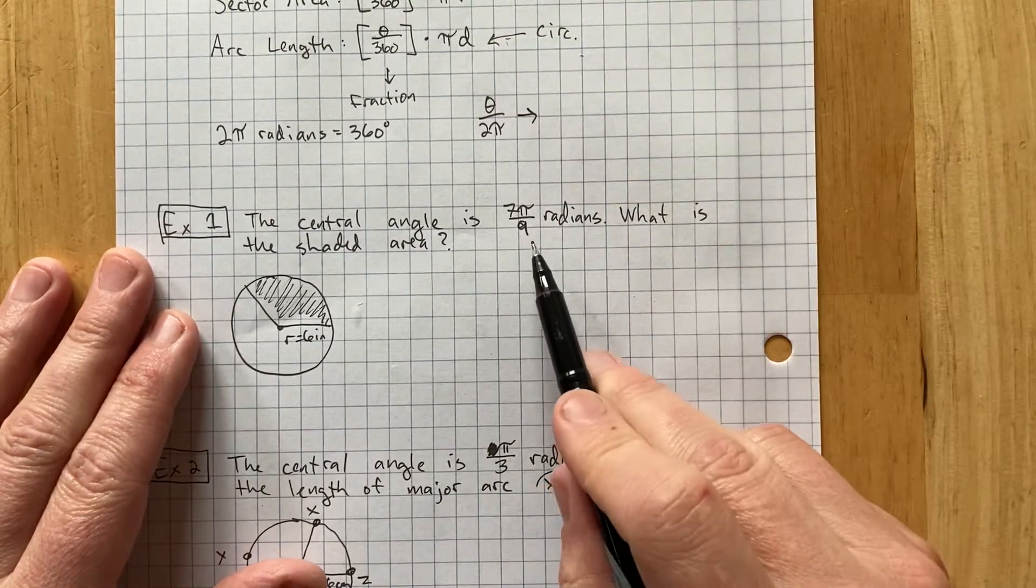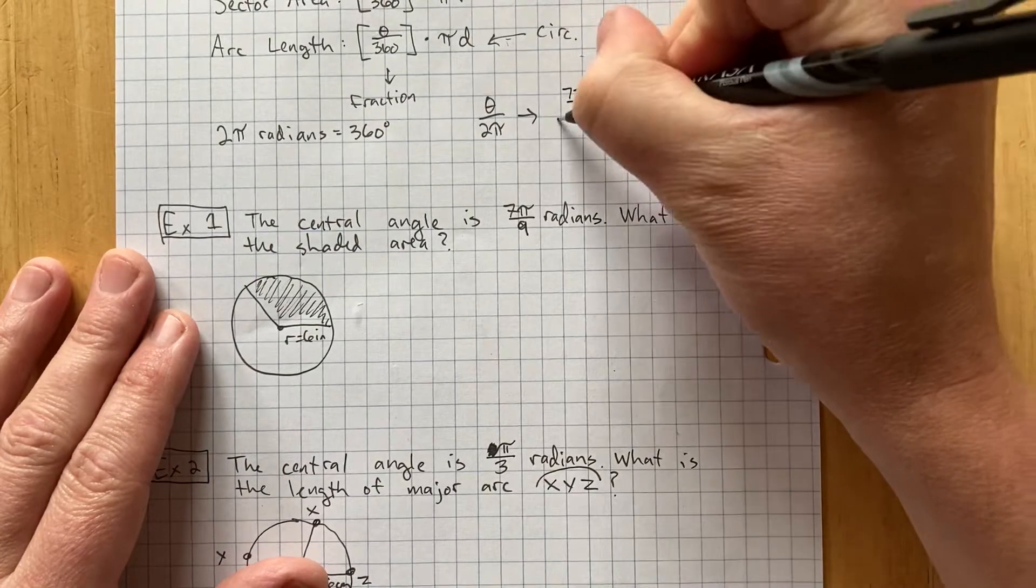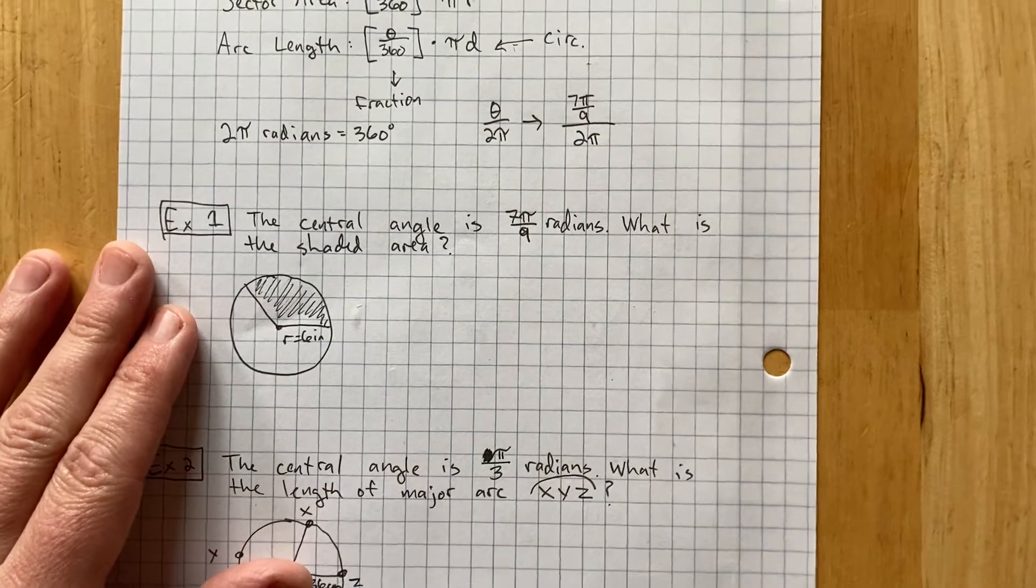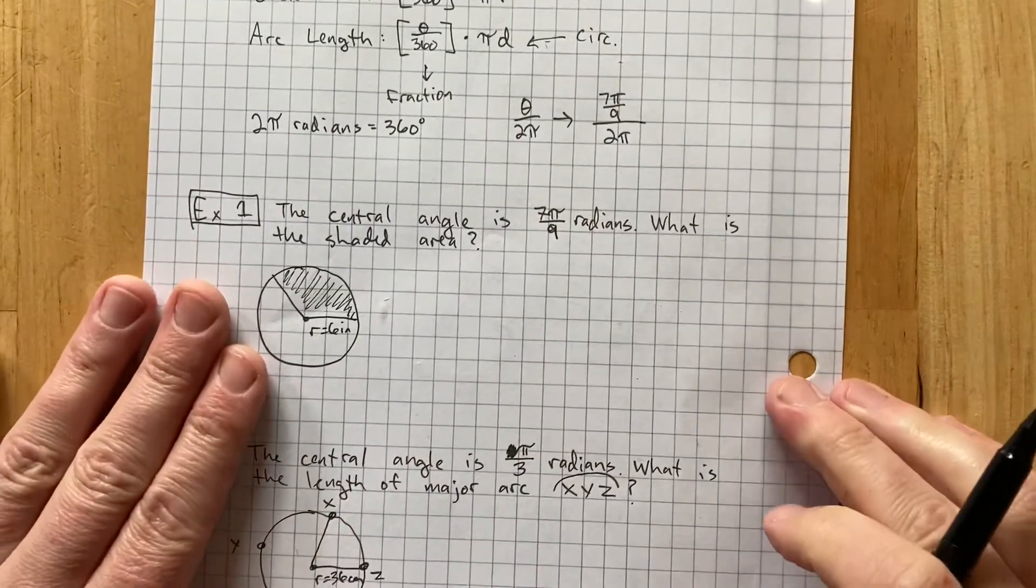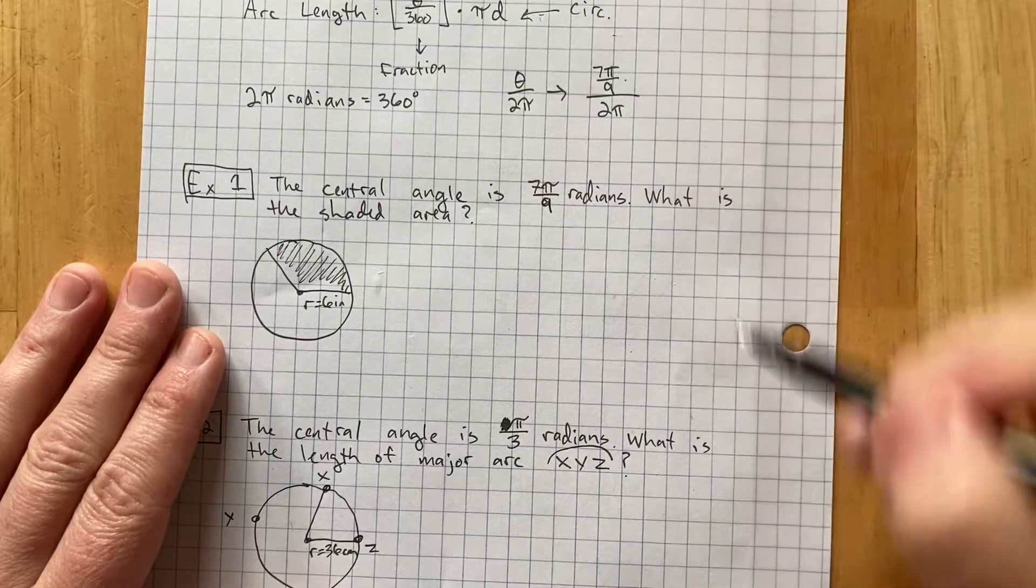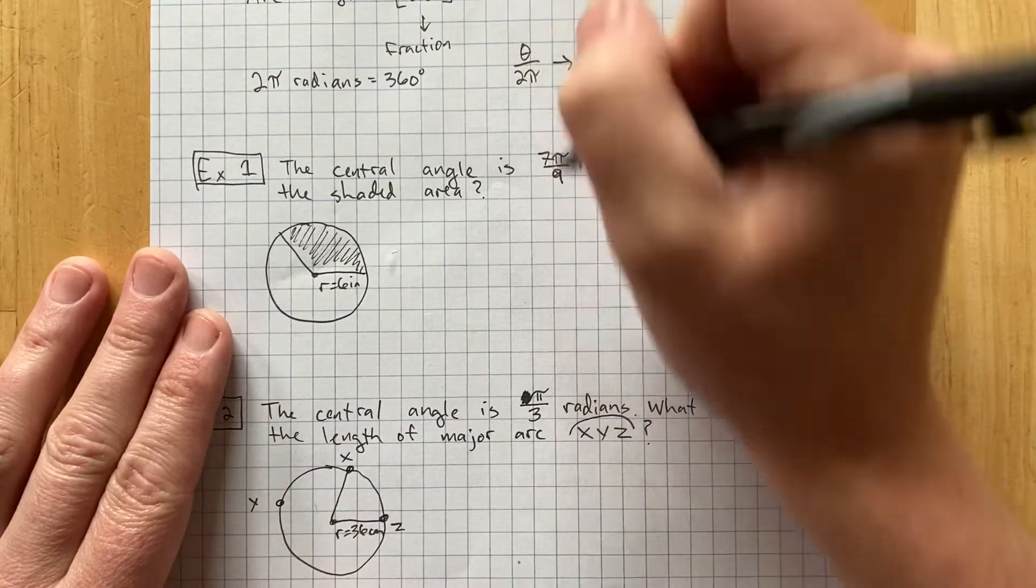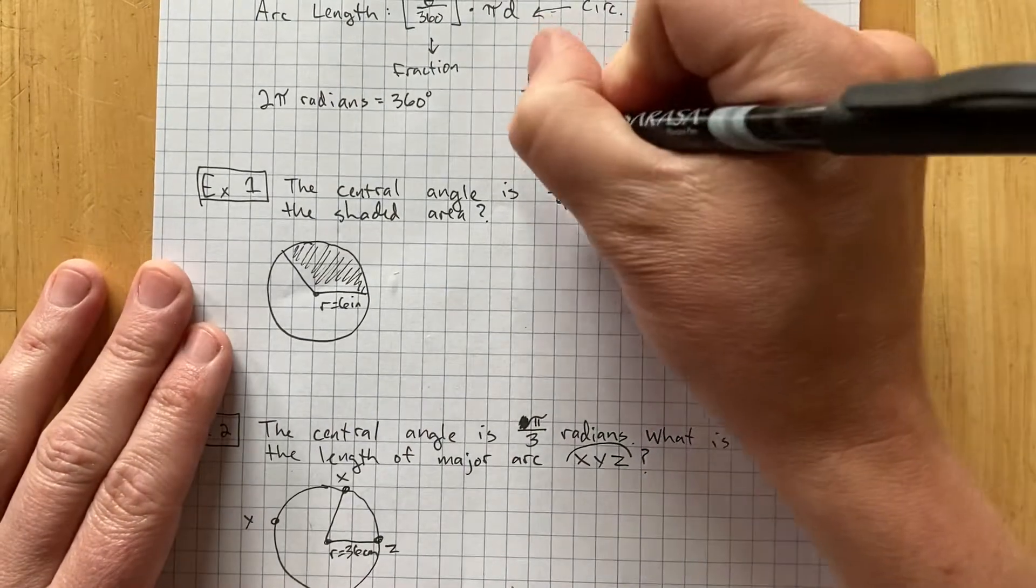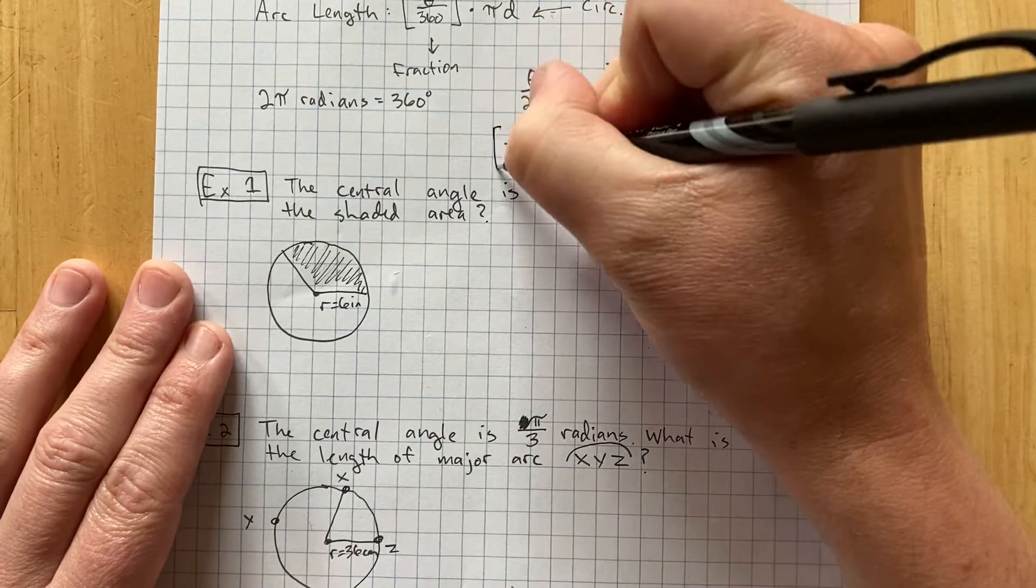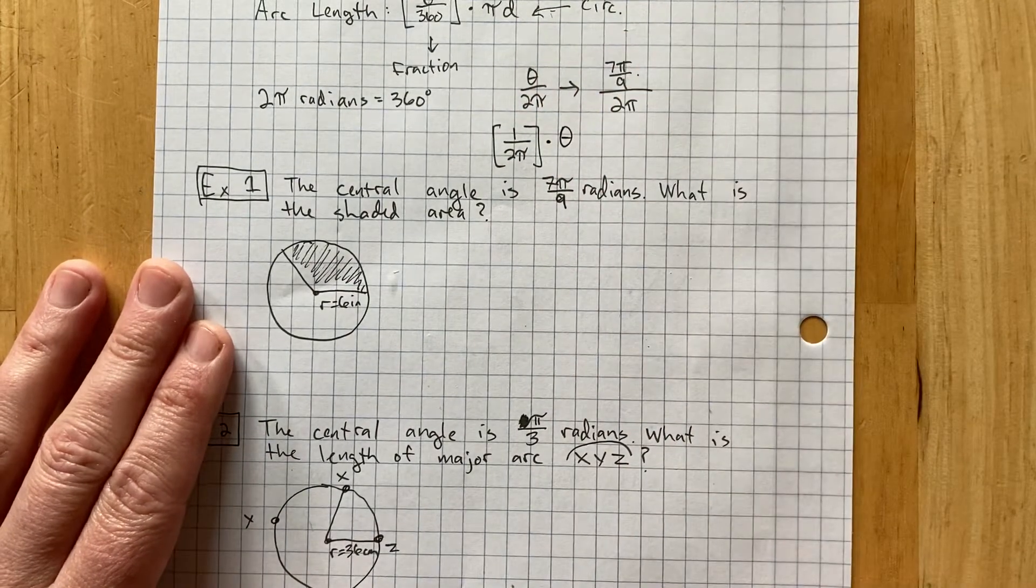Like, if you look at example 1, we're going to use 7 pi over 9 radians. 7 pi over 9 all over 2 pi can be a little tricky for beginning geometry students to deal with. So what I prefer to do, instead of doing divided by 2 pi, is I like to make it 1 over 2 pi. Because multiplying by 1 over 2 pi is the same as dividing by 2 pi. And then multiply that by theta.